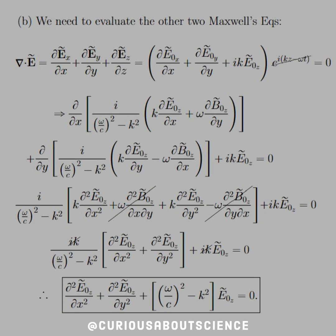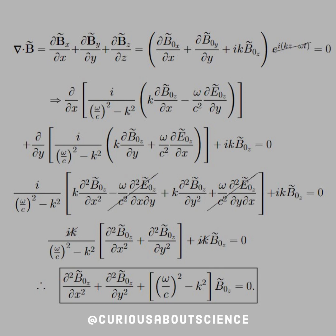We get the first coupled equation for the electric z-component. We then do the same for the magnetic coupled equation for Bz: set it up, cancel the exponential, take the derivative inside, let the mixed partials cancel, and cancel the i·k terms — the same process. Nothing here is necessarily hard, but it's definitely cumbersome. The main challenge is knowing which multiplications and operations to perform to isolate E-naught-x, E-naught-y, B-naught-x, and B-naught-y, and then substitute them in. Algebra — love it or hate it, you still need it.